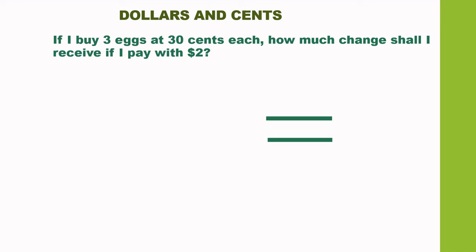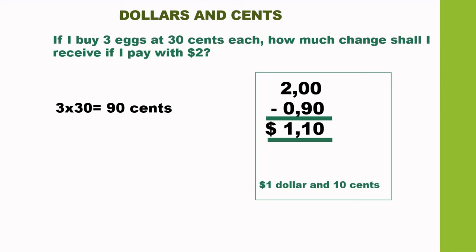If I buy 3 eggs at 30 cents each, how much change shall I get if I pay with $2? The total cost of 3 eggs is 3 times 30, which is 90 cents. Then we subtract 90 cents from $2. We convert 90 cents into dollars by dividing by 100, giving us 0.90. So $2 minus 90 cents gives us $1.10.